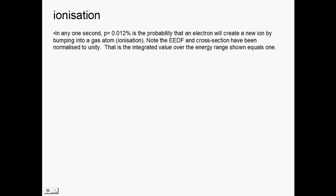So ionization then. Ionization occurs when, so in any one second with those two distributions, there's a 0.012 percent probability that an electron will create a new ion and electron pair by bumping into a gas atom.